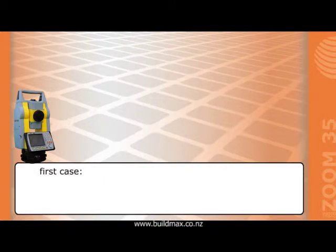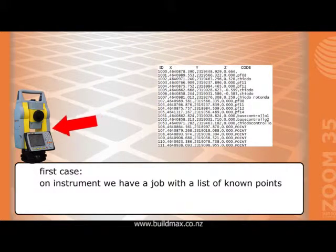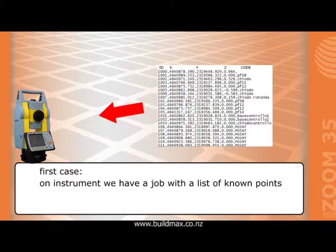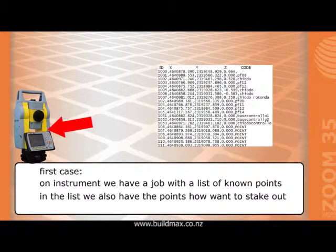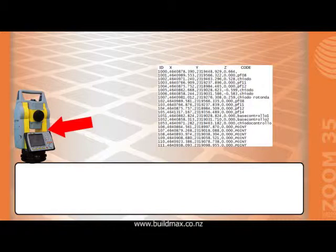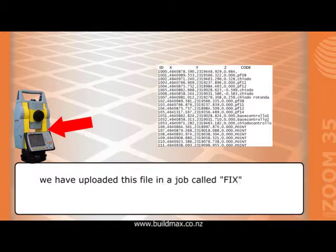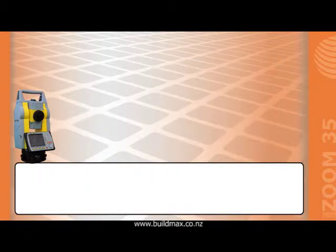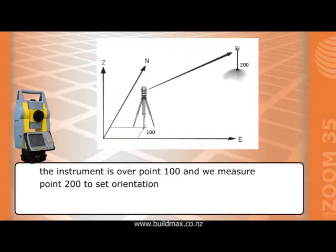First case. On the instrument we have a job with a list of known points. In the list we also have the points we want to stake out. We have uploaded this file in a job called 'fix'. The instrument is over point 100 and we measure point 200 to set orientation.